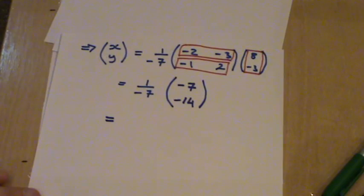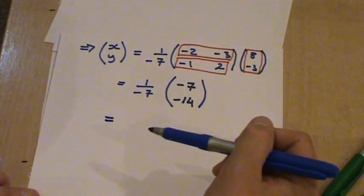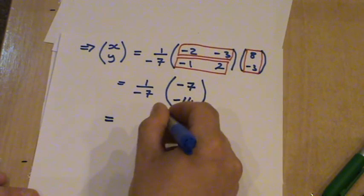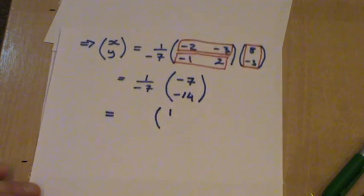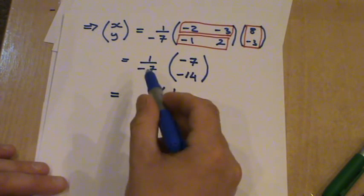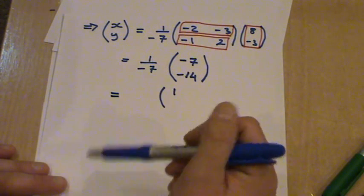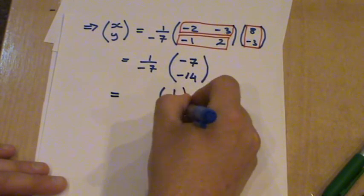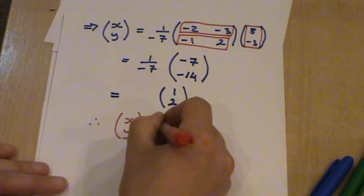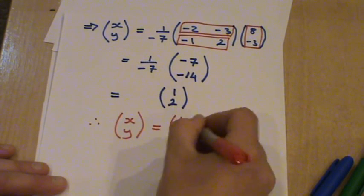And then this is going to give you, so we know that 1/7 of 7 is 1, so minus 1/7 by minus 7 would be a plus 1. And 1/7 of 14 is 2, so minus 1/7 by a minus 14, again we give you a plus 2. So therefore, your x, y equals 1, 2.